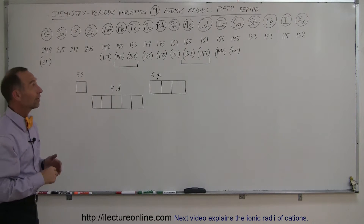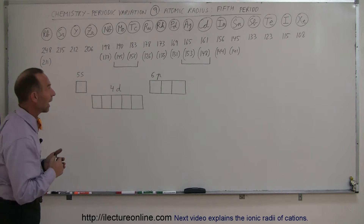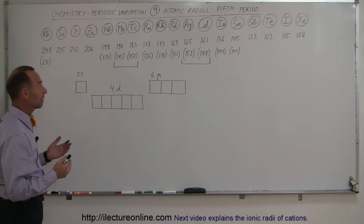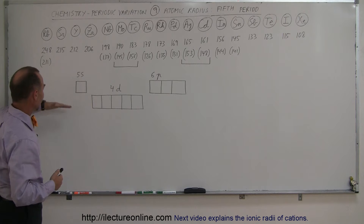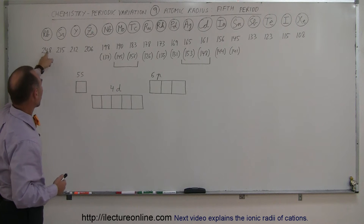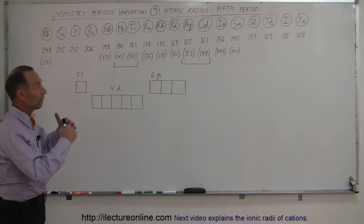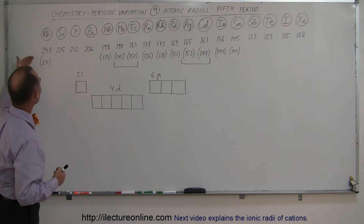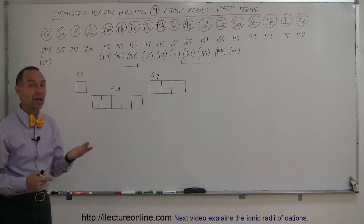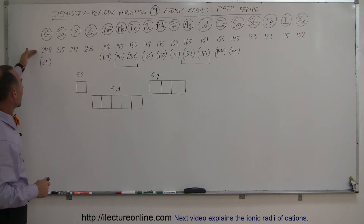Welcome to Electron Online. Now let's take a look at the fifth period on the periodic table and how the atomic radius is affected by the position of the elements on the table. Notice that now we're on the fifth period down. Notice how large the radii of the elements are — there are many more electrons in orbitals around the nucleus, and so you see quite large sizes for the atomic radii.